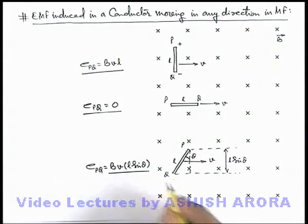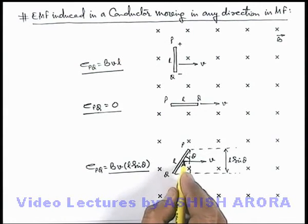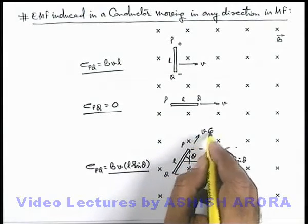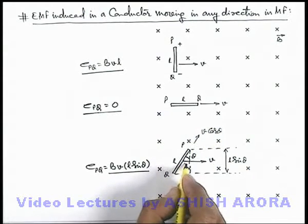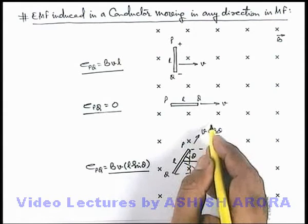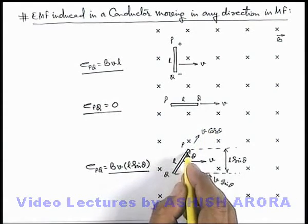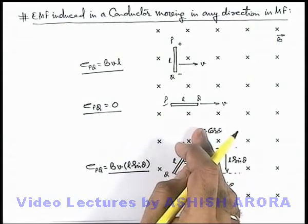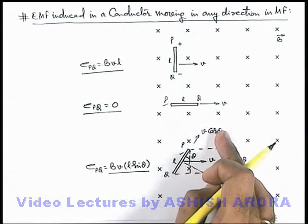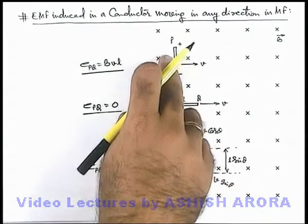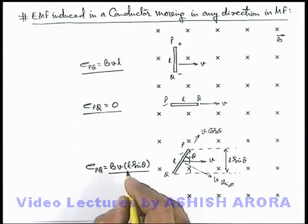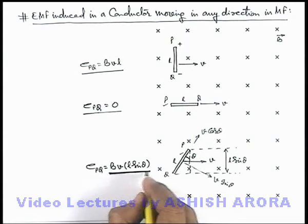Alternatively, the motional EMF can be calculated by taking components of the velocity: one along the length, which is v cosθ, and another perpendicular to the length, which is v sinθ. The component v cosθ corresponds to the conductor moving along its length, which produces no induced EMF. Only v sinθ contributes, corresponding to the first case, giving BVL sinθ — the same expression as before.